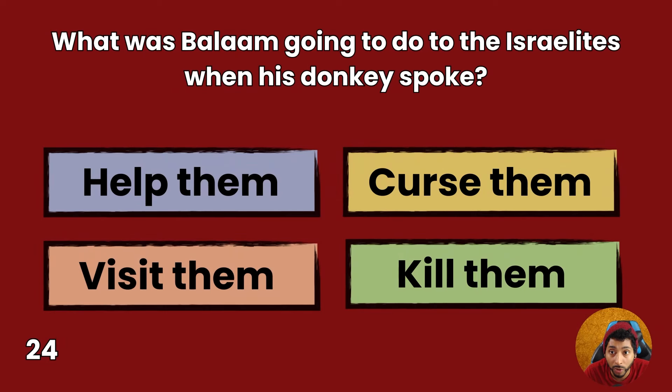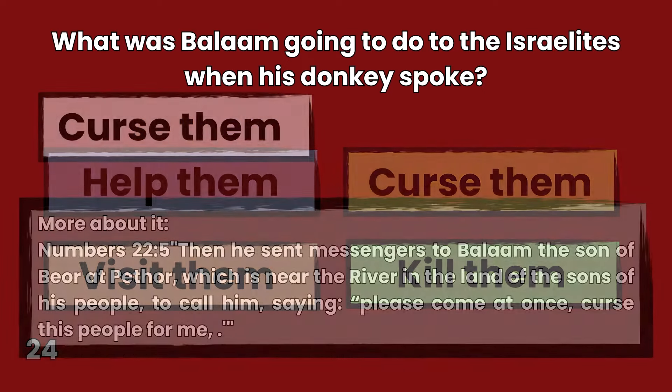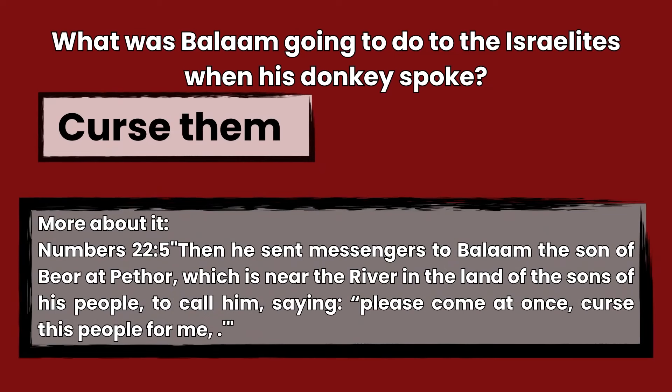Question 24: What was Balaam going to do to the Israelites when his donkey spoke? Help them, curse them, visit them, or kill them? Answer: Curse them. Numbers 22:5 — Then he sent messengers to Balaam, the son of Baor at Pethor, which is near the river in the land of the sons of his people, to call him, saying, Please come at once, curse this people for me.